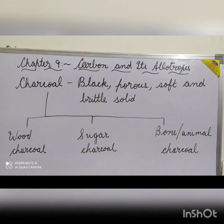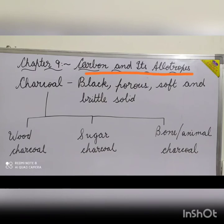Good morning students. Today we will continue with our chapter number 9, Carbon and its Allotropes. Till now we have studied the crystalline forms of carbon: diamond, graphite and fullerene. Today we will study about the non-crystalline or amorphous forms of carbon.